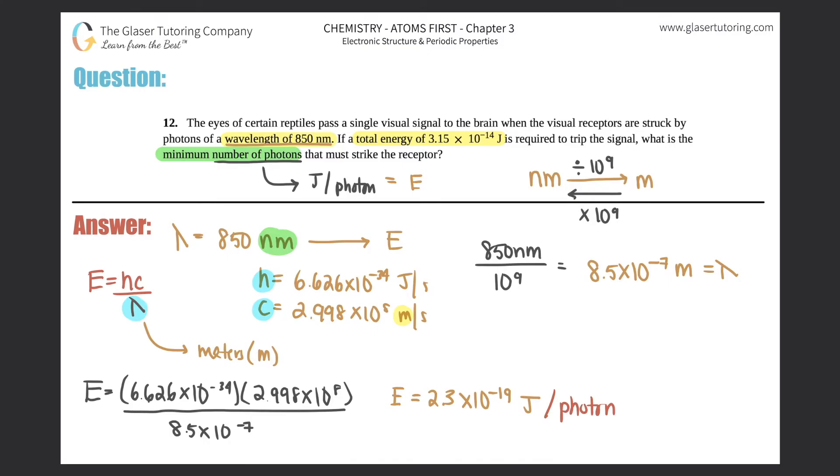But now they're just asking for just the number of photons. Well, if I'm looking for photons, that's my unit that I'm looking for. And I know that I have joules per photon, it seems that I just have to cancel out the word joule, and there you go, you have the word photon, which is the unit that you want. And look here, they gave you the other piece of the puzzle: they said the total energy was 3.15 times 10 to the negative 14th joules. We just need to find photons.